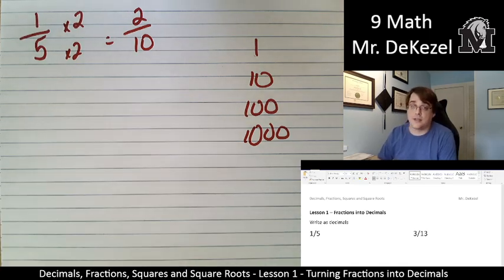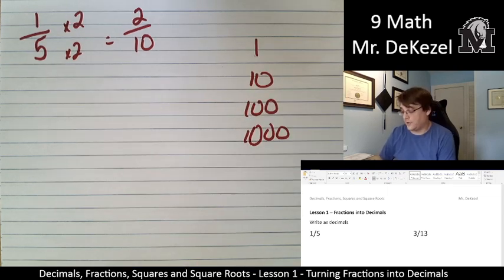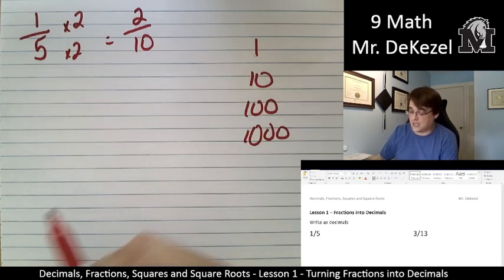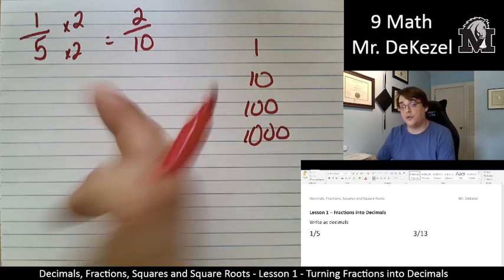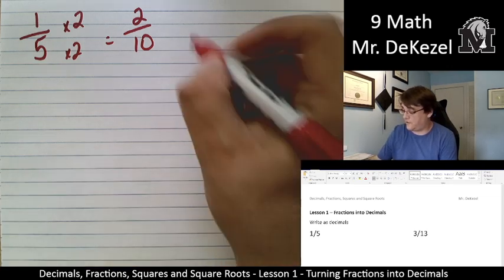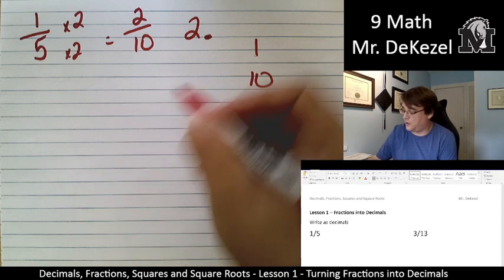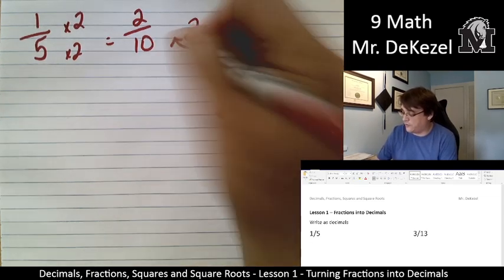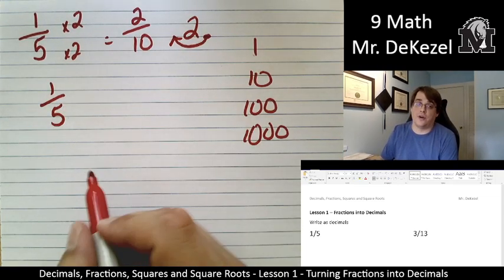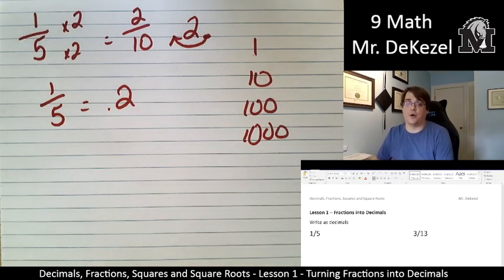If we have 1 fifth and you multiply the top and the bottom by 2, you get 2 tenths, and those are equivalent fractions. And when I have a 10 on the bottom, I can take the decimal point and move it over one spot. So if I had 2 and we move that decimal place over, the answer for 1 fifth is 0.2.